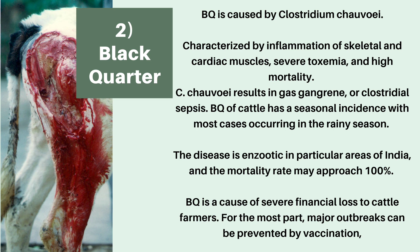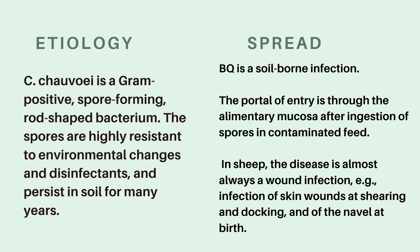Blackwater is enzootic in particular areas of India and the mortality rate can even approach 100%, causing severe financial losses to cattle farmers. Major outbreaks can largely be prevented by vaccination. As for the etiology, Clostridium chauvoei is a gram-positive, spore-forming, rod-shaped bacterium. The spores are highly resistant to environmental changes and disinfectants and may persist in soil for many years, similar to anthrax spores.